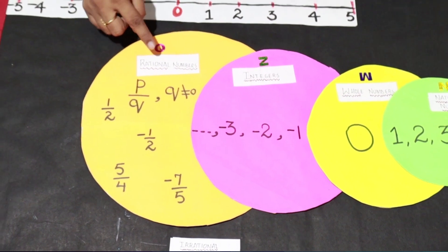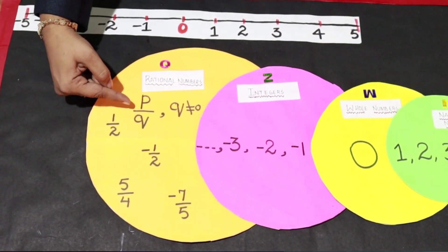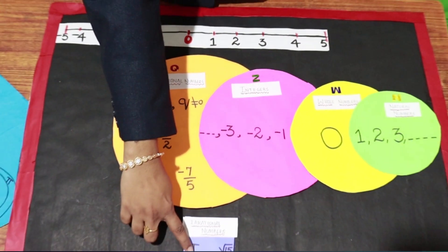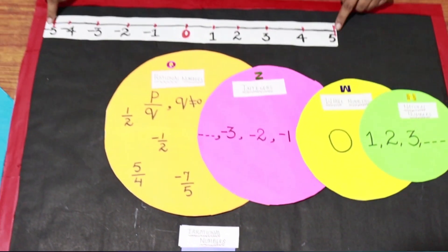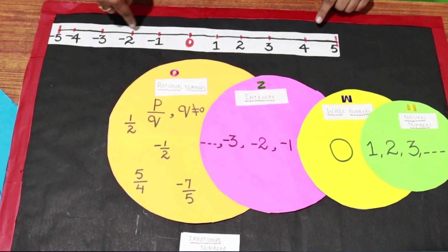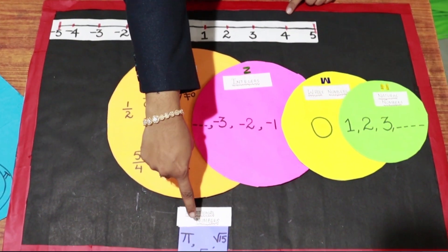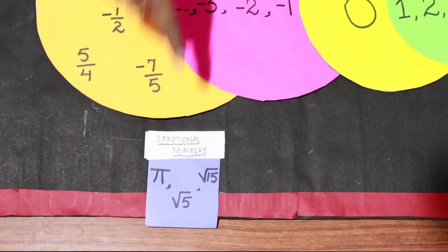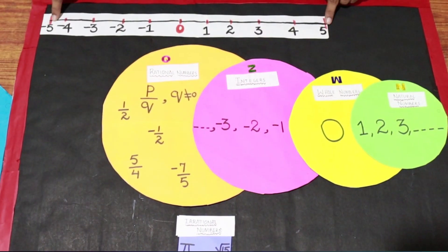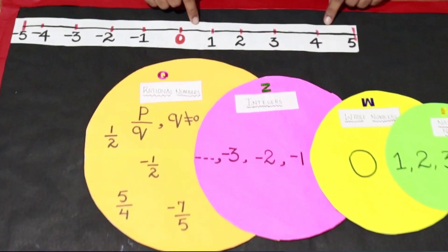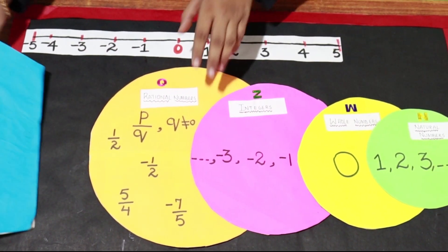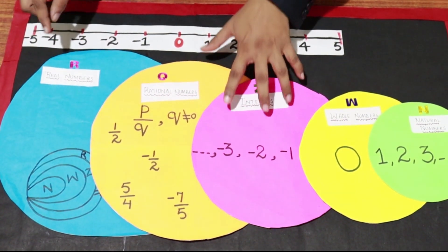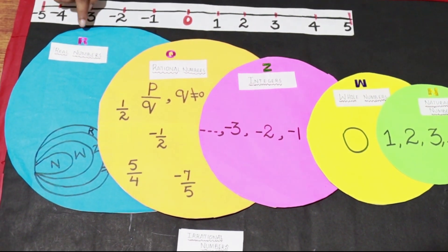The numbers which cannot be written in the form of P by Q are called irrational numbers. These numbers have fixed position on the number line. But irrational numbers, they do not have a fixed position or the place on number line. They have approximate place on number line. The set of all these numbers is real numbers. And these real numbers are denoted by the letter R.